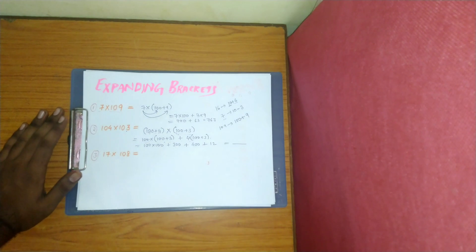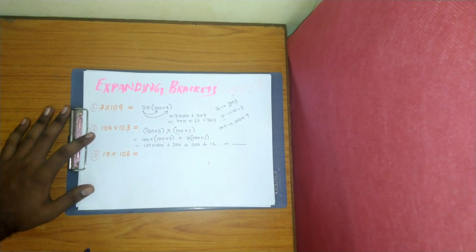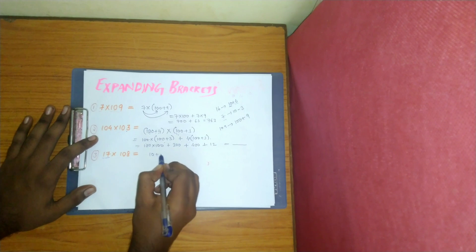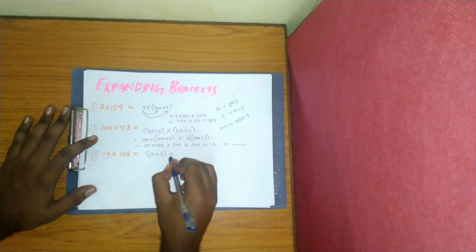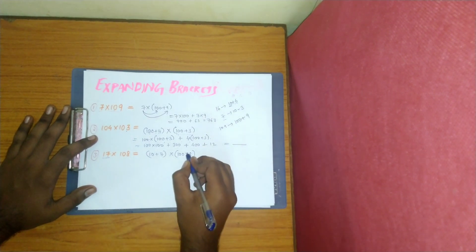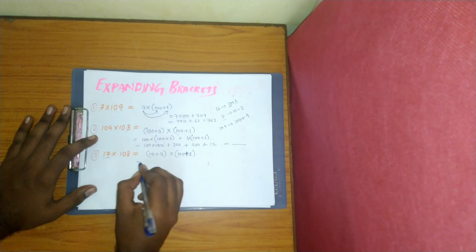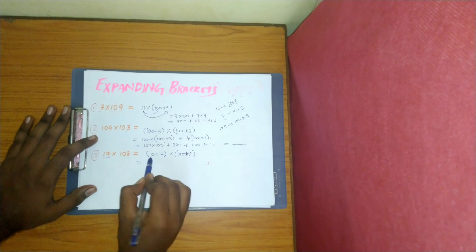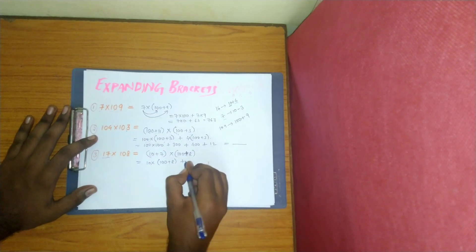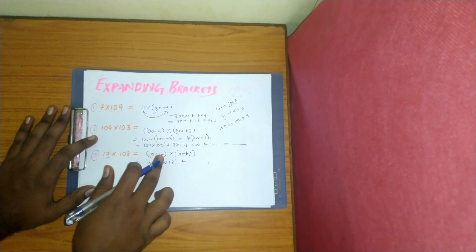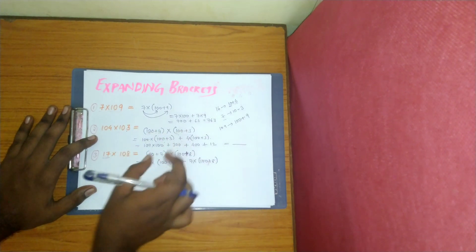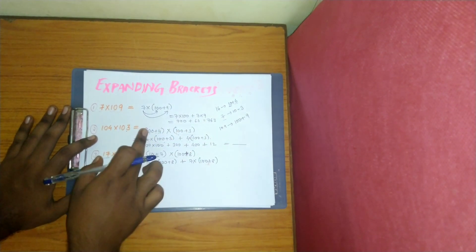So basically you have to understand this method. Let us take one more question. We take 17, so 17 we can write as 10 plus 7, right? And 108 we can write as 100 plus 8. So again the same method: first take the first number, that is 10, and multiply with the whole second number, that is 100 plus 8.